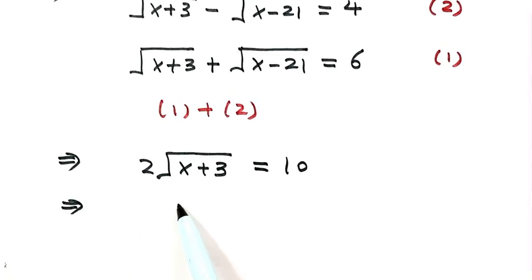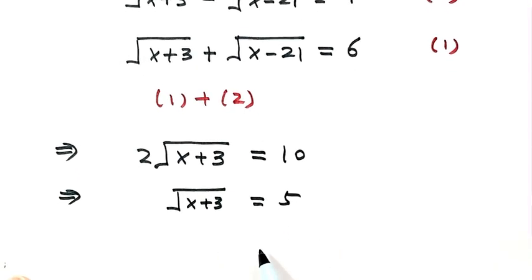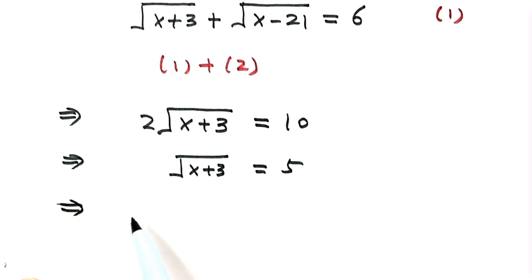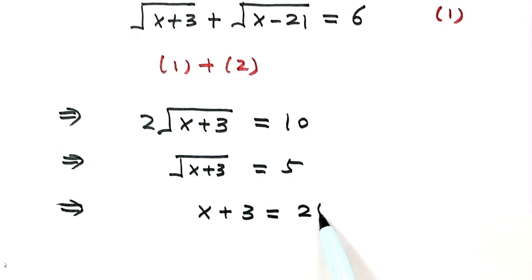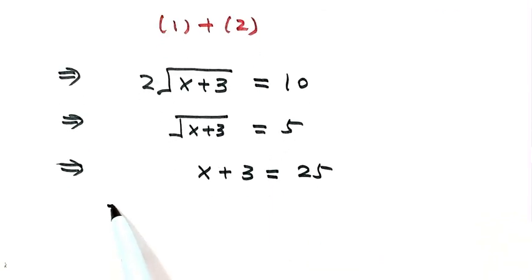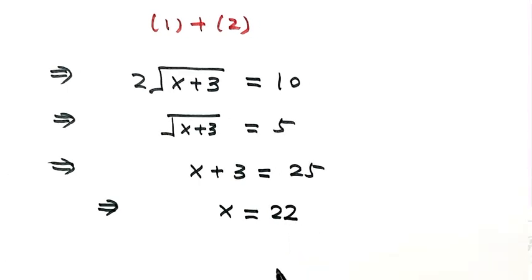Both sides divided by 2 gives square root of x plus 3 equals 5. Solving for x, we get x equals 22. Now we need to plug 22 into the original equation to check if it's a real solution.